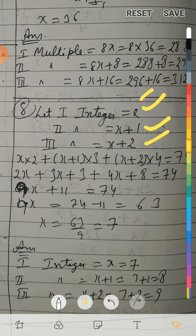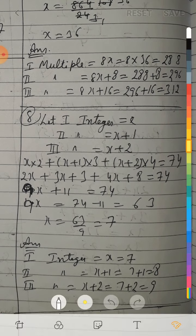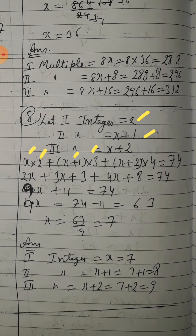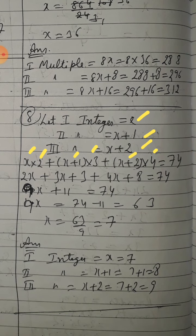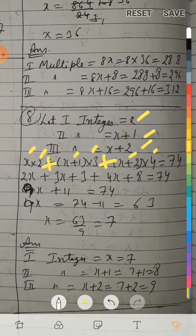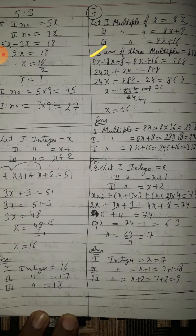They are multiplied by 2, 3, and 4 respectively and added up to 74. So: (x into 2) plus (x plus 1 into 3) plus (x plus 2 into 4) = 74. Multiplying out: 2x plus 3x plus 3 plus 4x plus 8 = 74.